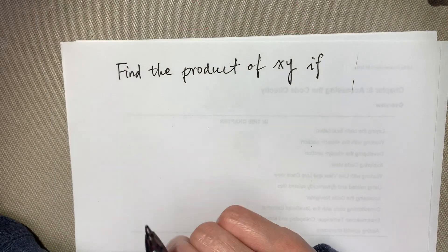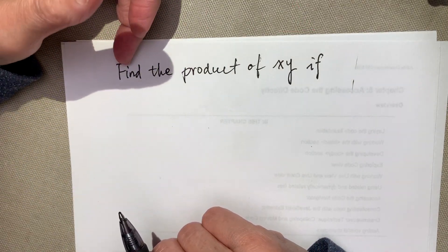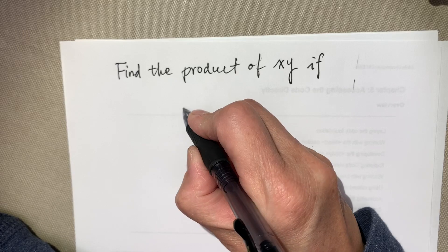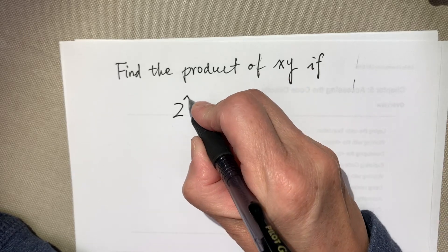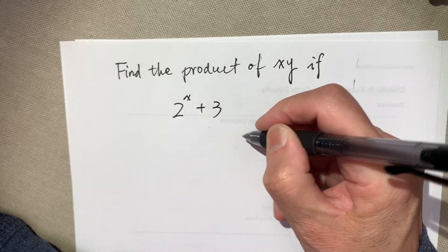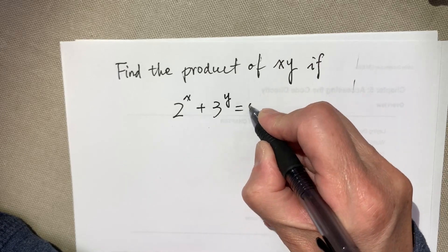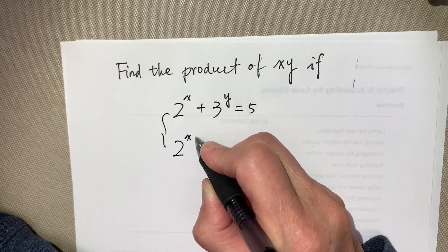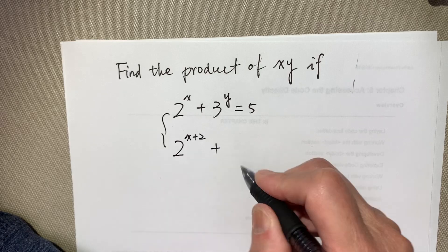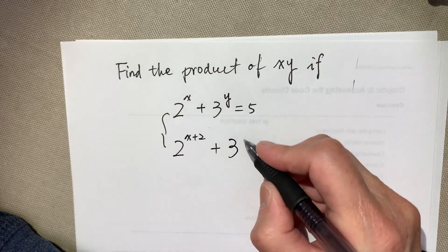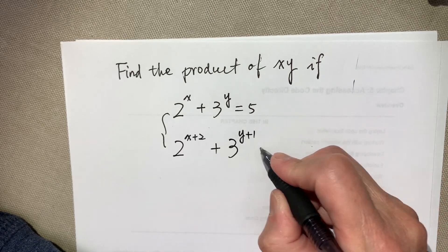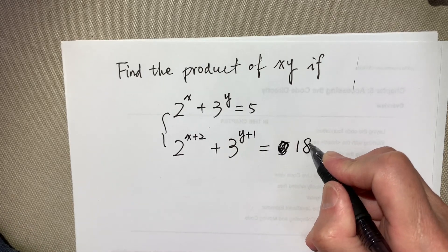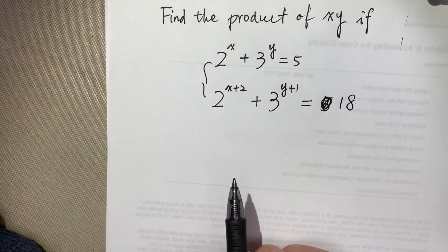Okay, hello dear friends. This question is find the product of x times y. If 2 to the power of x plus 3 to the power of y equal to 5, and 2 to the power of x plus 2 plus 3 to the power of y plus 1 equal to 18.